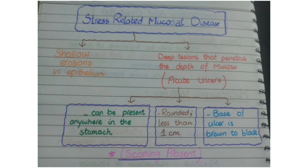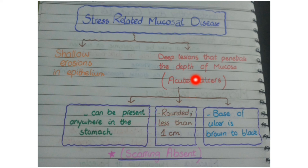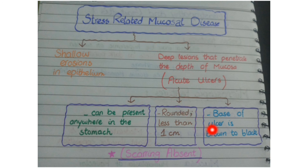Pathological features specific to acute ulcers in stress-related mucosal disease: first, these acute ulcers can be present anywhere in the stomach. Second, they are small and rounded in size, usually less than one centimeter.